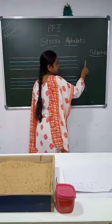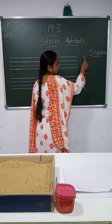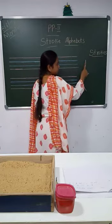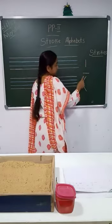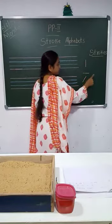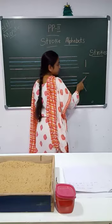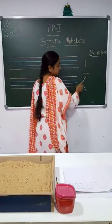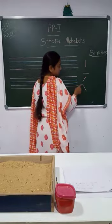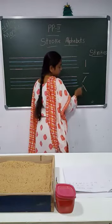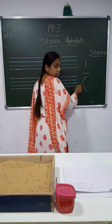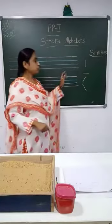Standing line — from top to bottom. Standing line. Then sleeping line. Left slanting line. Then right slanting line.